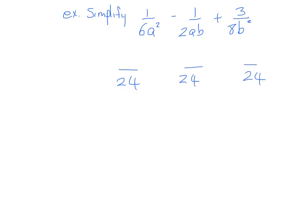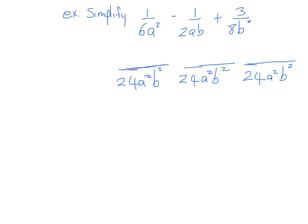That's only part of our new denominator — we also have to look at each variable. The lowest common multiple for the a's is a squared, because a squared is a multiple of a but not vice versa. And the lowest common multiple for the b's is b squared. So our full lowest common multiple is 24a squared b squared.